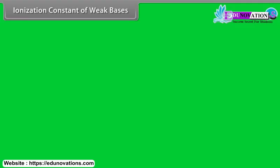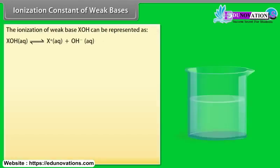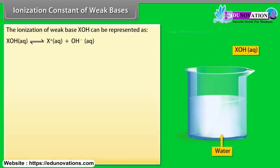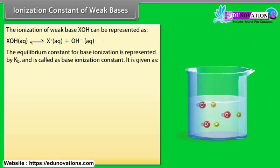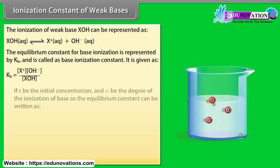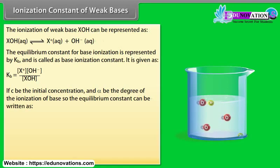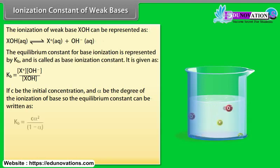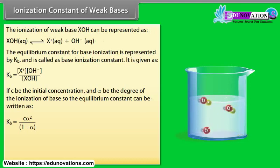Ionization constants of weak bases. The ionization of a weak base XOH can be represented as an equilibrium. The equilibrium constant for base ionization is represented by Kb, called the base ionization constant. If C is the initial concentration and alpha is the degree of ionization, the equilibrium constant can be written as Kb = Cα² / (1 - α).